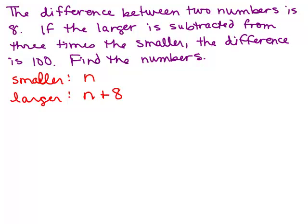And again, you could have done this the other way. You could have made the larger one n, then the smaller would be n minus 8. You'd have to take away 8. So here's one way we could define the two numbers.